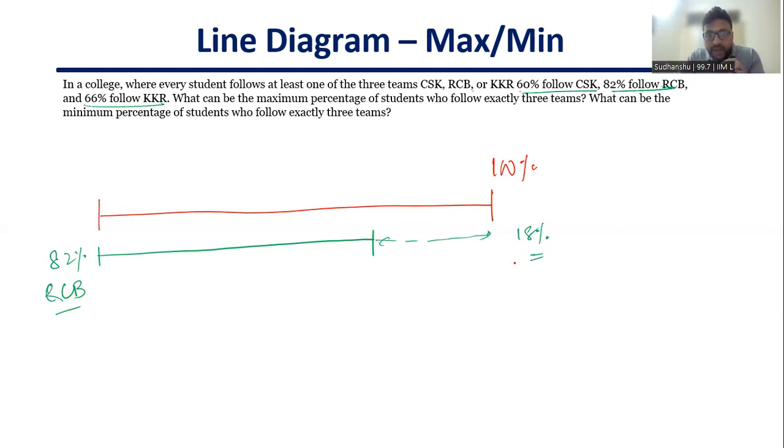Now, how do I maximize? Think about it. I must have something filling in this gap also, because I can't have anybody who will basically be not following any of the teams. If that condition were not there, what would I do? I would simply fill the remainder pieces, 66% KKR, I'll fill it like this, and 60% CSK, I'll fill it like this, and I'll get my final answer. I'll see what is the maximum alignment here. But in this case,